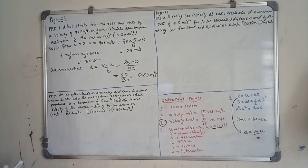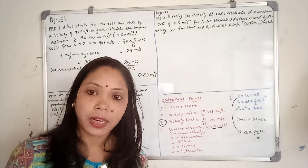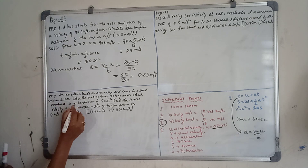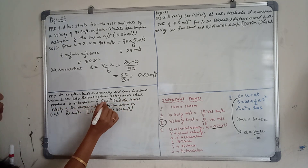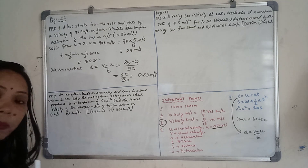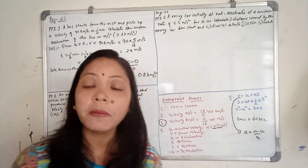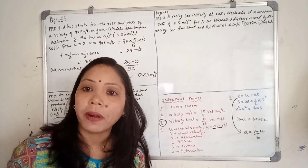Now practice problem number 2 — I am discussing part 2 and you try part 1 yourself. An aeroplane lands on a runway and comes to a standstill in 20 seconds when the braking force produces a retardation of 5 meters per second squared. Find the initial velocity of the aeroplane during touchdown in meters per second and in kilometers per hour.